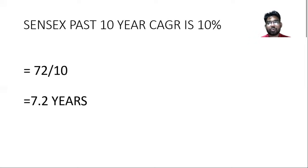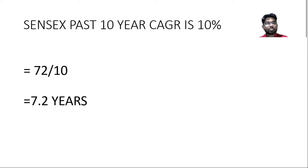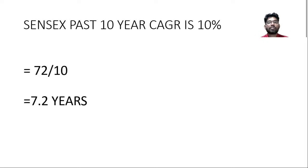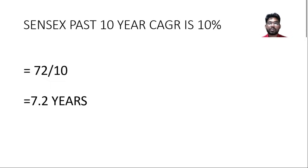Now if we compare this to the Sensex 10-year CAGR — from 2011 till now, we are in 2021 — the Sensex has given roughly 10 percent CAGR. So if you were invested at that point, your investment would have doubled in approximately 7.2 years. That was the Rule of 72.